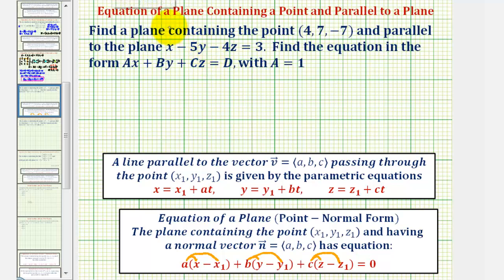Looking at the equation of the given plane, notice how the coefficient of x would be 1, coefficient of y is -5, the coefficient of z is -4. So a normal vector to the given plane, we'll call it vector n, would have an x component of 1, a y component of -5, and a z component of -4.